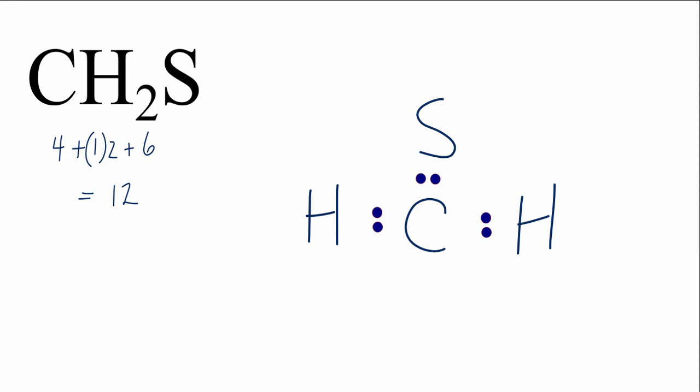Hydrogens only need two valence electrons. They're okay, but we'll put valence electrons around that sulfur. So it turns out we've used all 12 valence electrons.